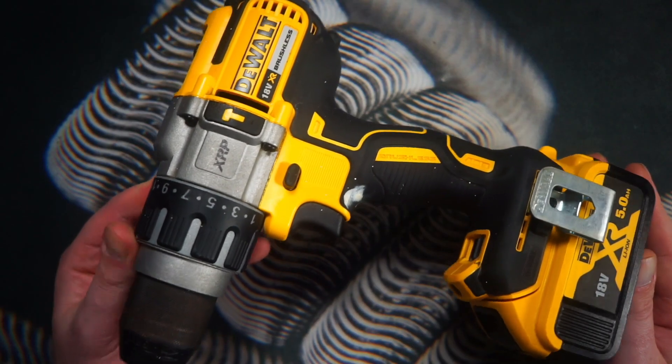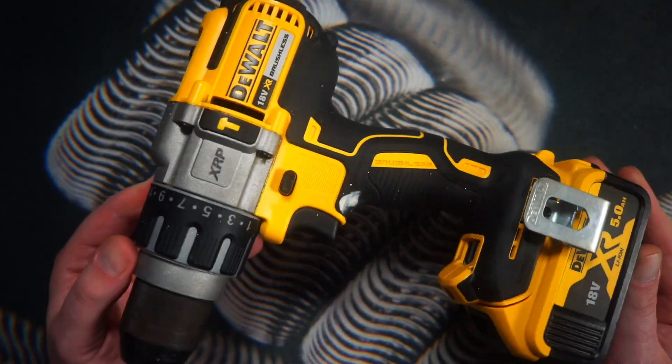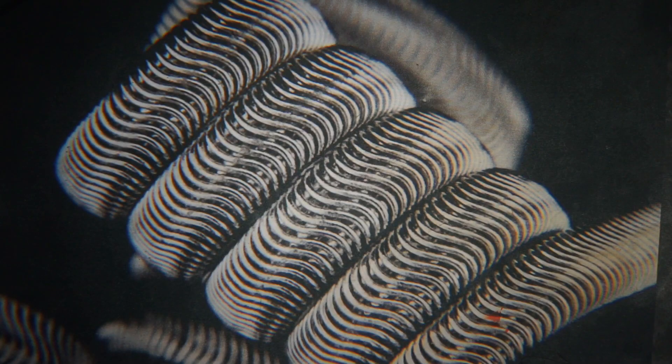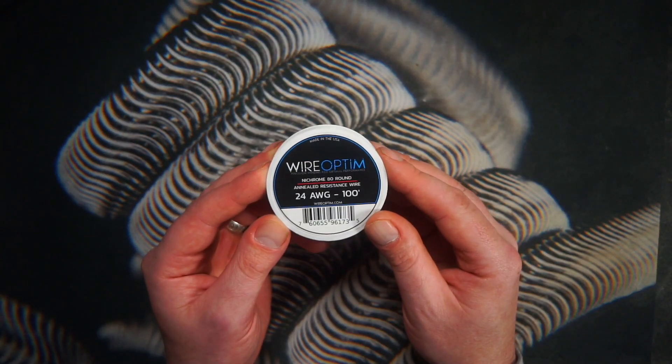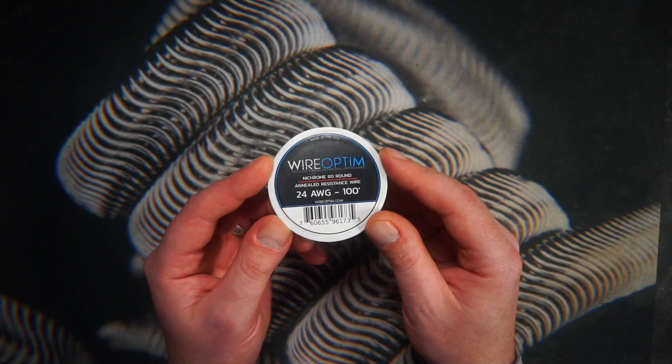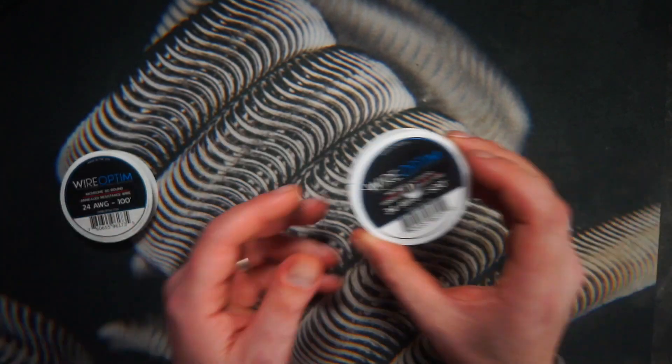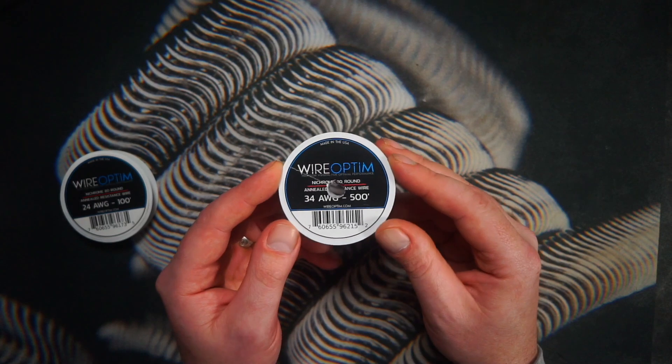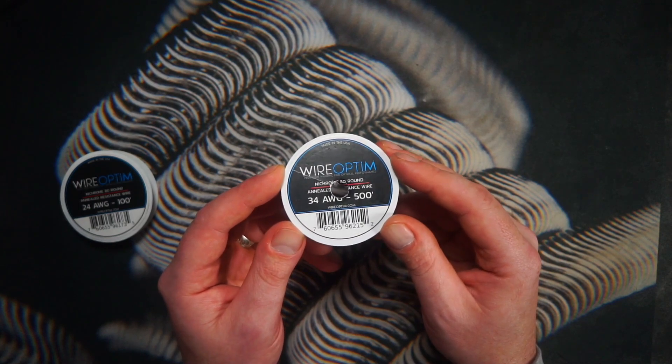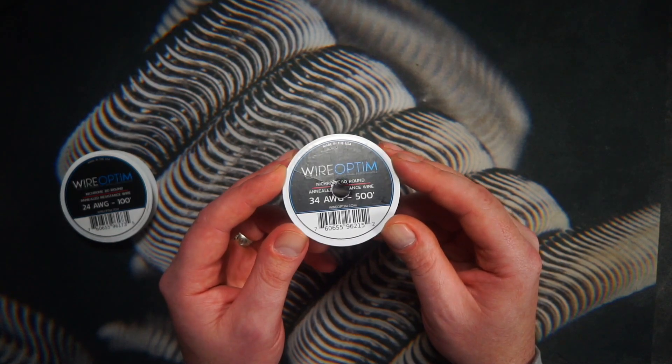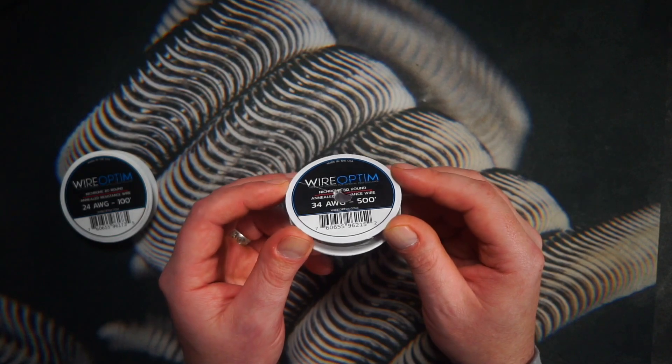Some sort of drill, whether cordless or corded. And lastly, we need our wire. Today we're going to be using 24-gauge nichrome - two pieces of 24-gauge nichrome wrapped in 34-gauge nichrome. Five wraps at three millimeter for our fused Claptons, it's going to ohm at 0.1 dual coil.